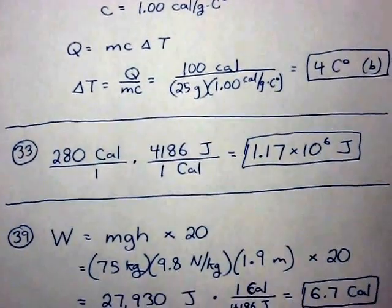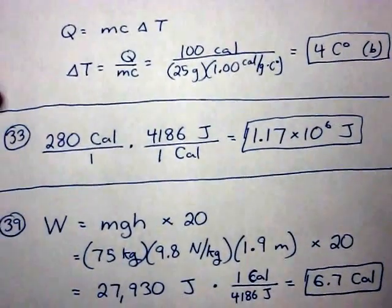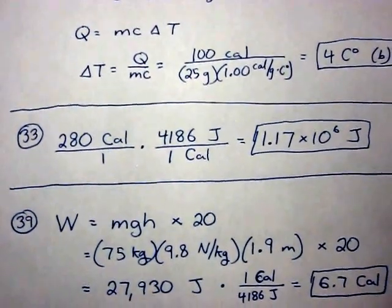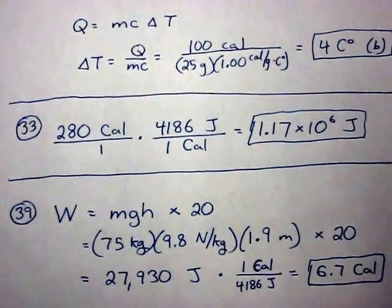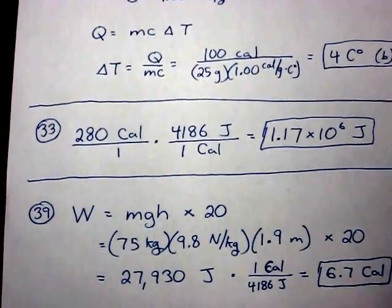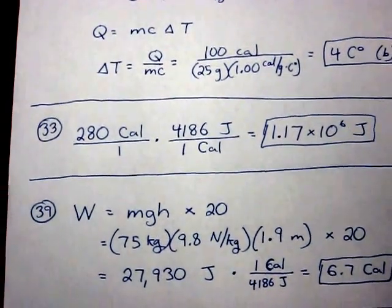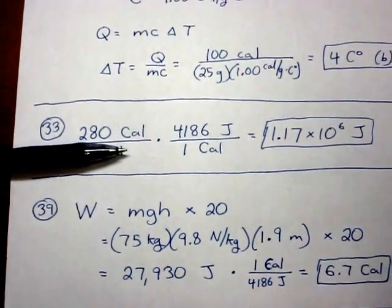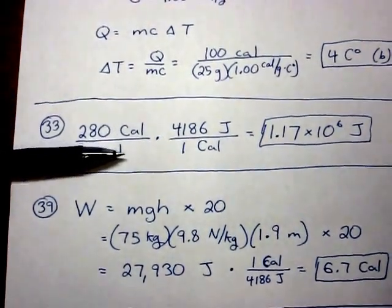Number 33 is a straightforward conversion from 280 calories. Notice in the problem it says capital C calories, that's a kilocalorie. So 280 kilocalories times the conversion of 4186 joules per kilocalorie. That would be 1.17 times 10 to the 6 joules.